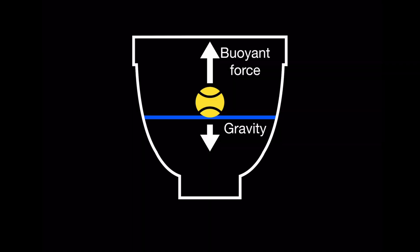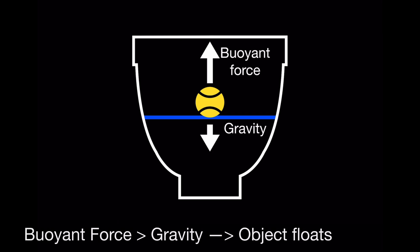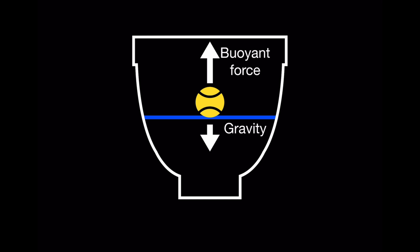The first property we'll look at is buoyancy. When an object is immersed in a fluid like water, the water exerts an upward force on that object — we call this the buoyant force. That object also experiences a force pulling it down, which is gravity. If the density of the object, in this case a tennis ball, is lower than the density of the fluid, then the buoyant force will be greater than gravity, resulting in the object floating.